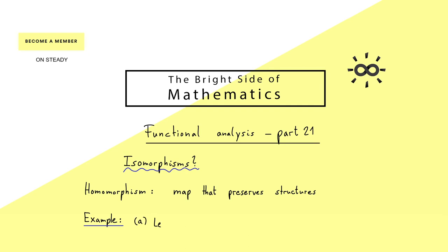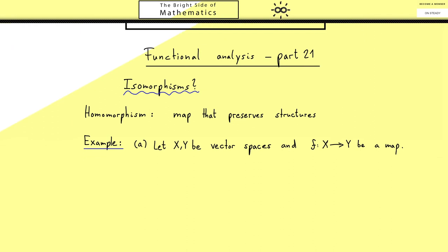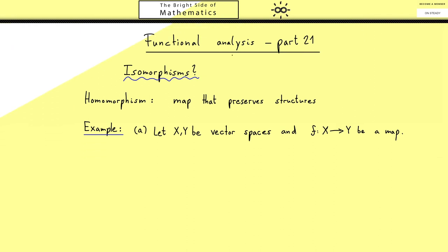For the first example, let X and Y be two vector spaces and f be a map between them. Now the structure we want to conserve here is of course the vector space structure, the linear structure. This linear structure is not so complicated—we just have the addition and the scalar multiplication. Now each vector x in X is mapped by f to a new vector f(x).